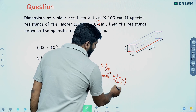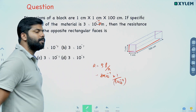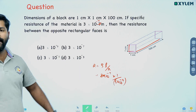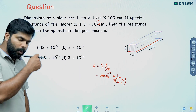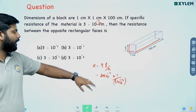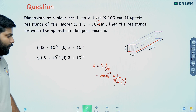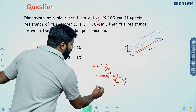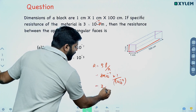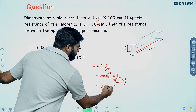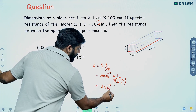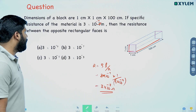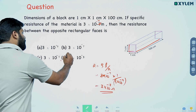Substituting into R = ρL/A: L = 1 × 10⁻² m (1 cm), and area A = 1 × 10⁻² × 1 × 10⁻² = 1 × 10⁻⁴ m². The answer works out to 3 × 10⁻³ ohms — option D.